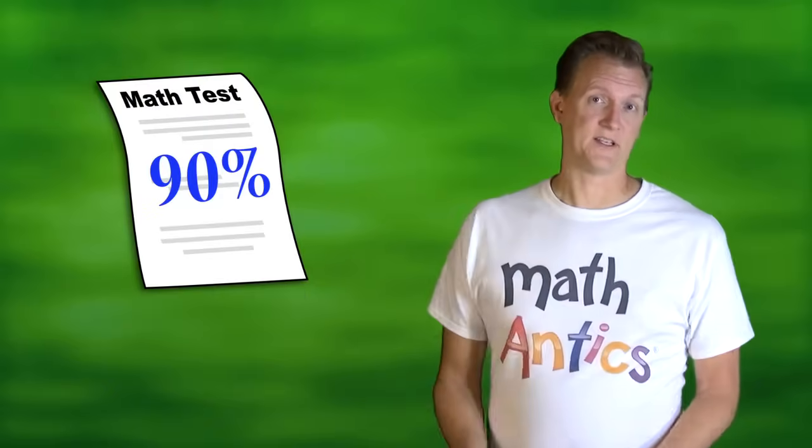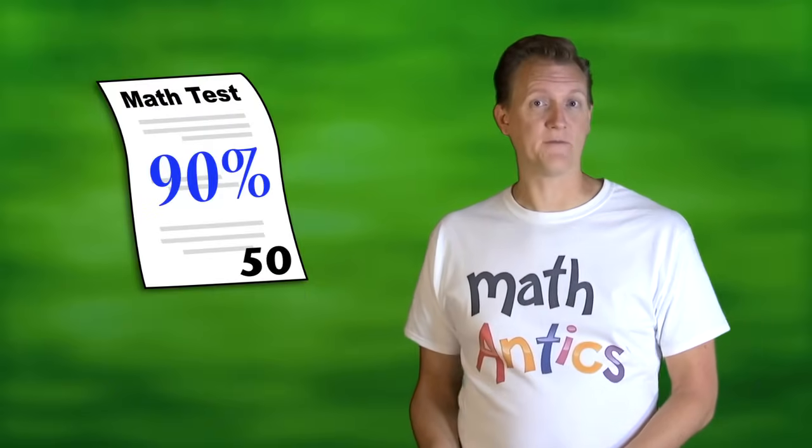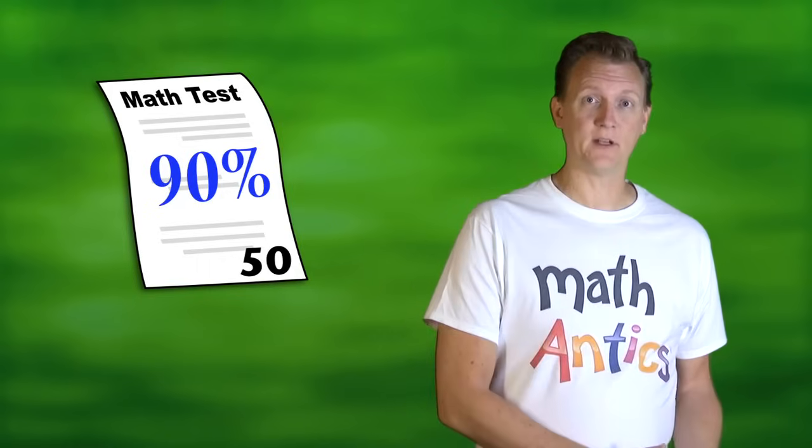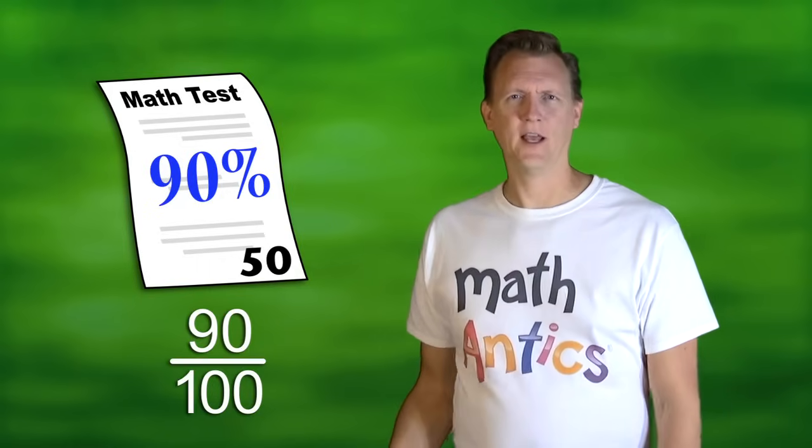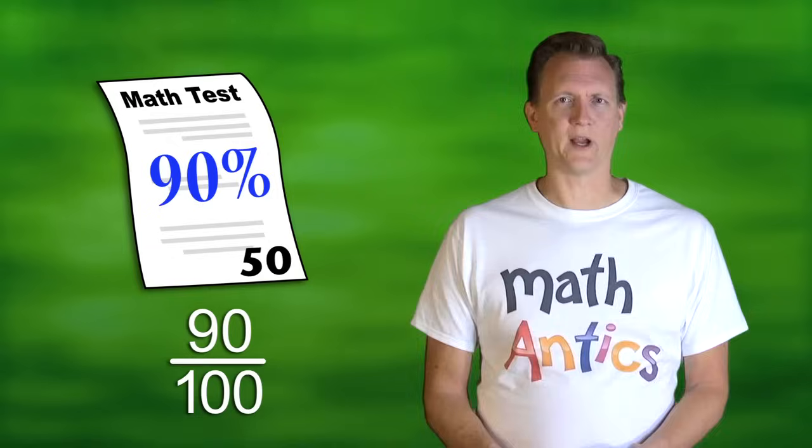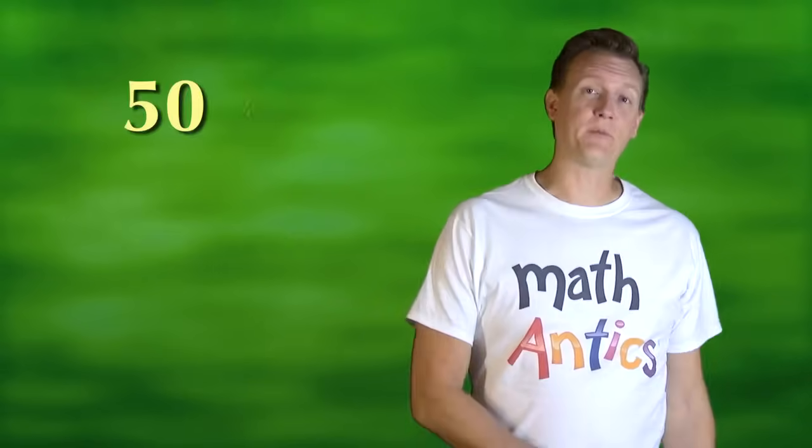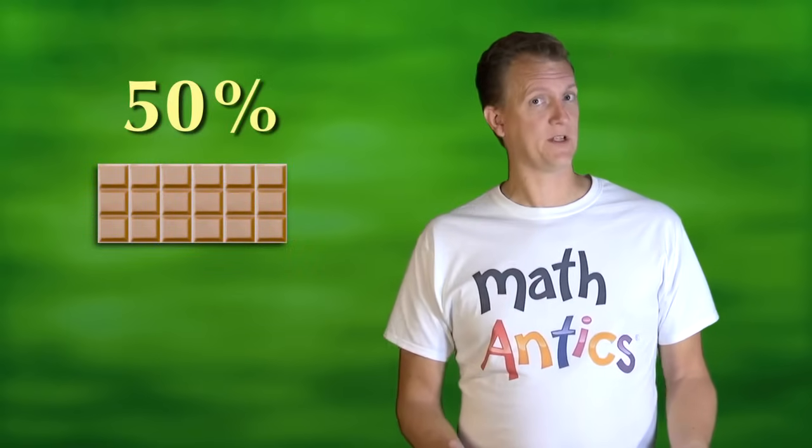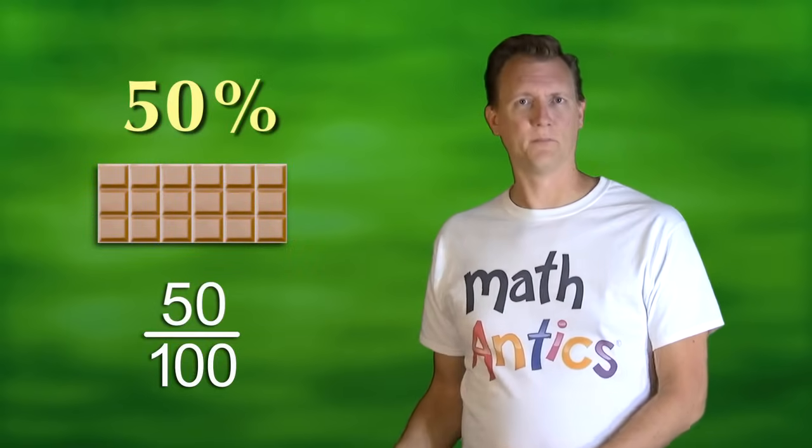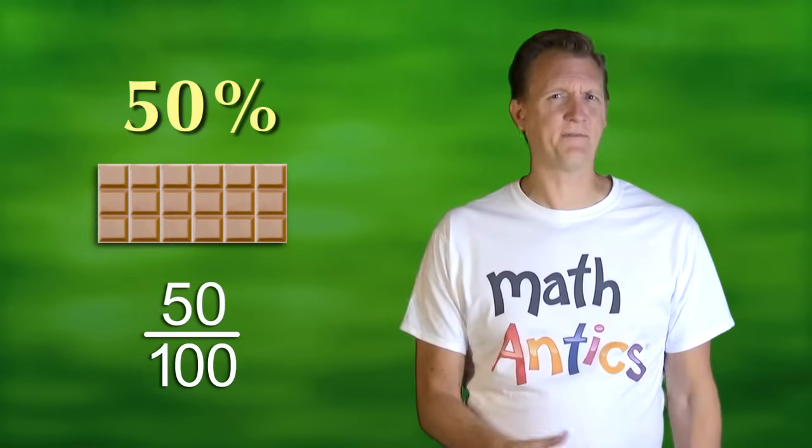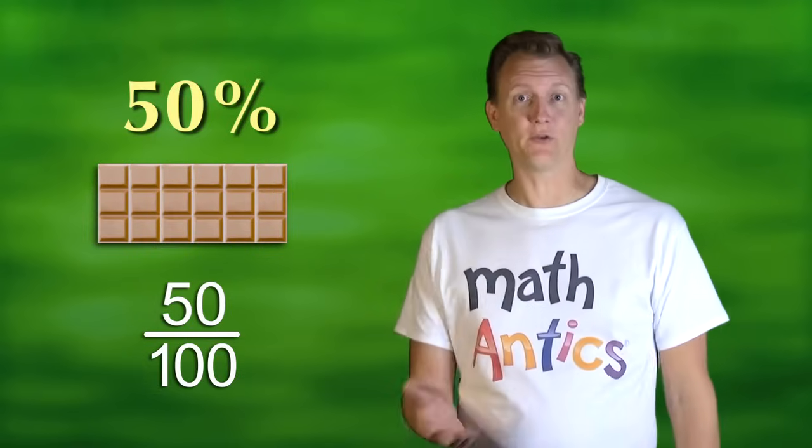Like if you scored 90% on a test, but the test only had 50 questions on it. 90% means 90 out of 100, but how can you get 90 questions right if there's only 50 on the test? Or what if your friend says that he'll give you 50% of his candy bar? 50% means 50 out of 100, but how can he give you 50% if he doesn't have 100 candy bars? He's only got one!